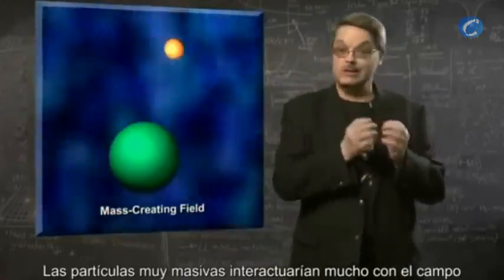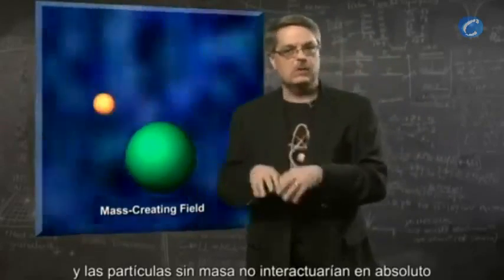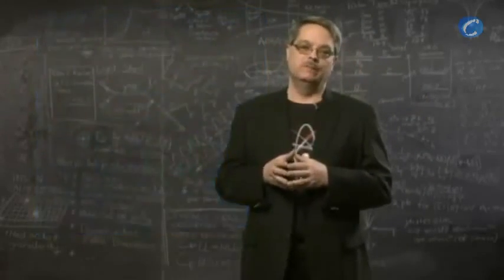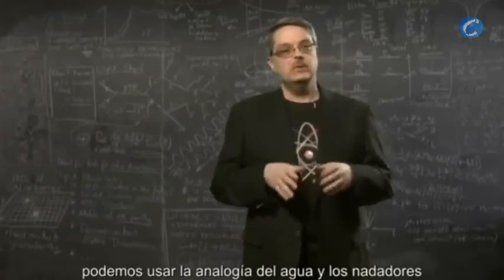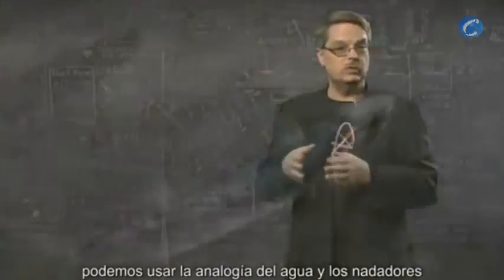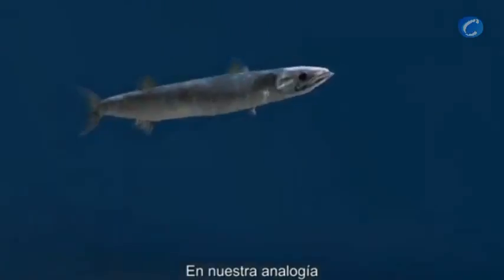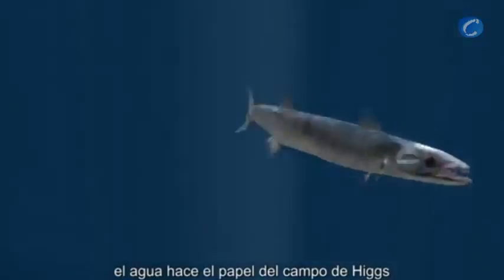Very massive particles would interact a lot with the field, while massless particles wouldn't interact at all. To better understand the idea, we can use the analogy of water and swimmers. In our analogy, the water serves the role of the Higgs field.